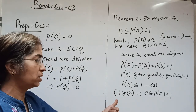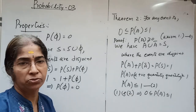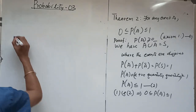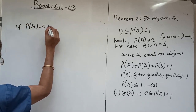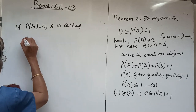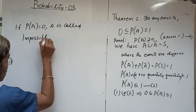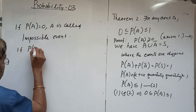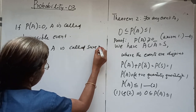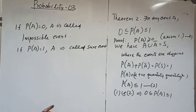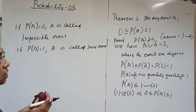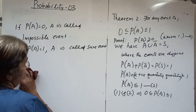If P(A) = 0, A is called an impossible event. If P(A) = 1, it is called a certain or sure event. If P(A) is a number strictly between 0 and 1, it is called an uncertain event. So Theorem 2 states that for any event A, 0 ≤ P(A) ≤ 1.